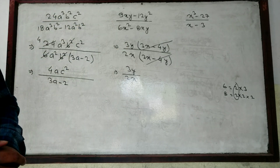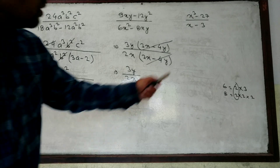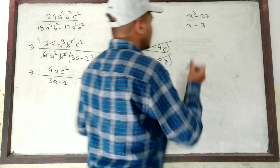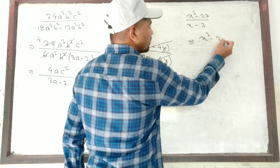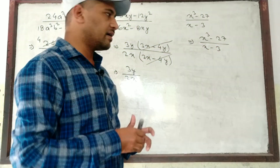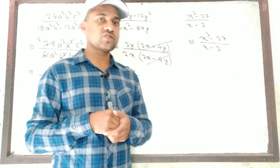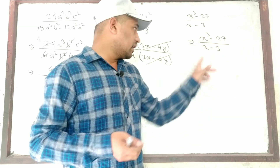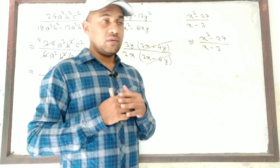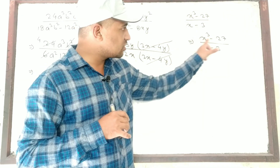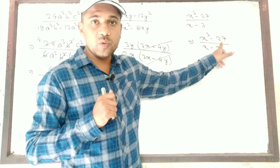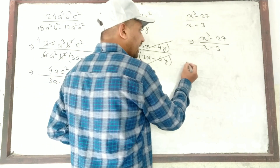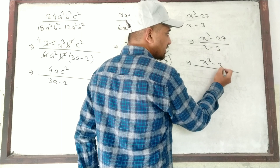Now the last question of this video: (X³ minus 27) divided by (X minus 3). We cannot take any element common — neither a number nor a variable. We cannot use simple common factoring here. However, we can convert X³ minus 27 into the form of a formula: A³ minus B³, since 27 = 3³. So we can use the formula here.